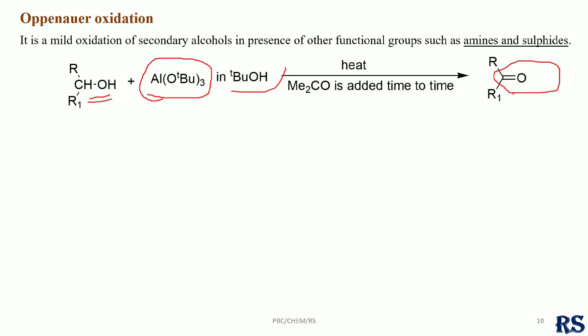The solvent is tert-butanol — it is a liquid. Acetone is added gradually. The reagents are aluminium tert-butoxide and tert-butanol as solvent.